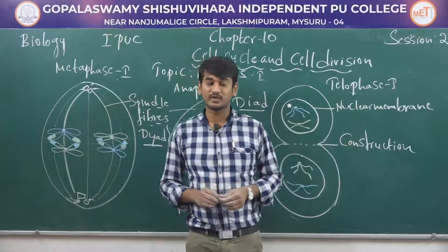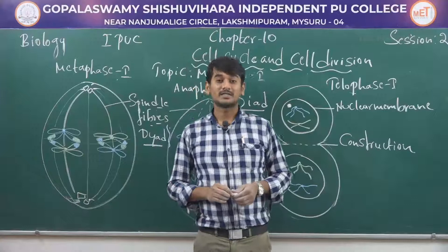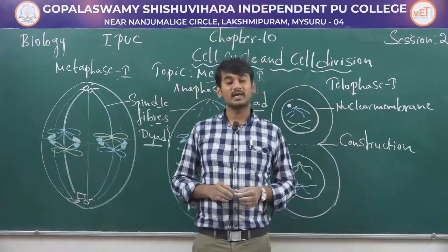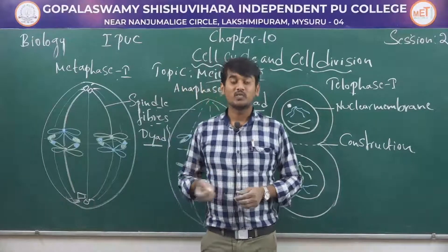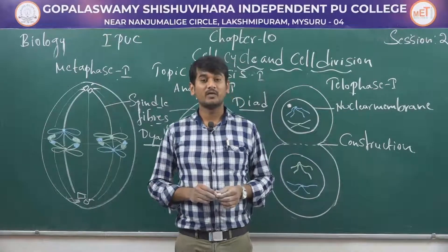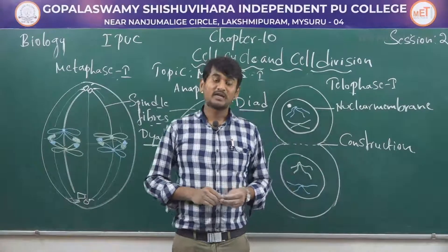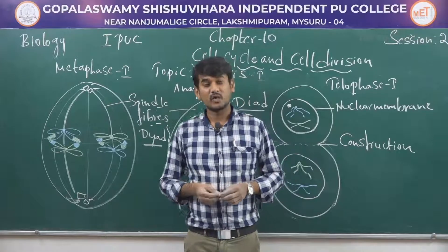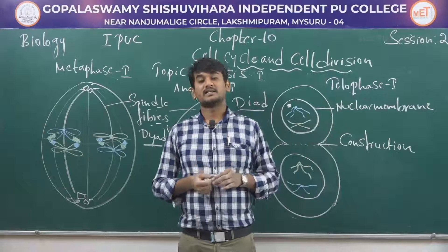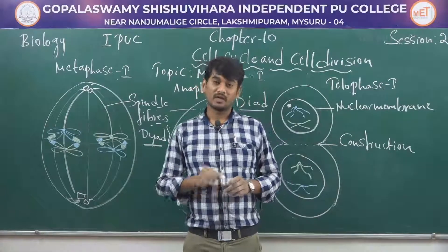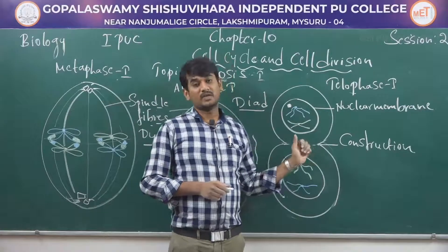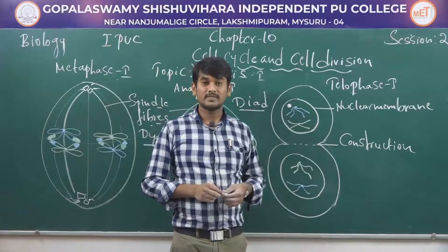In this session we discussed that meiosis is a type of cell division also called reductional division, because the daughter cells have only half the number of chromosomes compared to the parental diploid cell. Meiosis takes place in two types: meiosis I and meiosis II. In meiosis I, the parental cell divides into two daughter cells through prophase I — with sub-stages leptotene, zygotene, pachytene, diplotene, and diakinesis — followed by metaphase I, anaphase I where diads are formed, and telophase I where the nuclear membrane reappears and cytokinesis produces two daughter cells. Thank you.